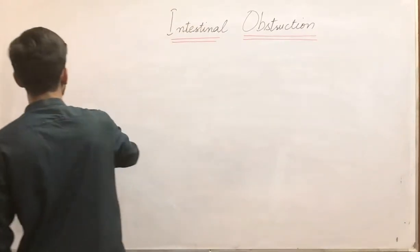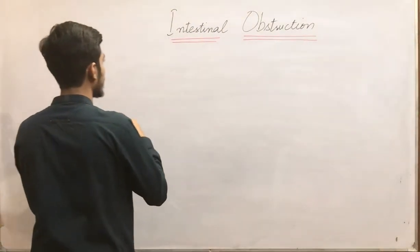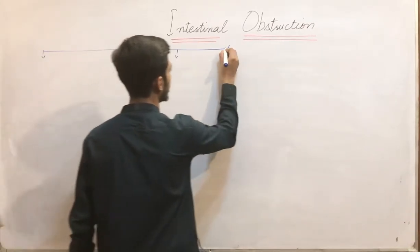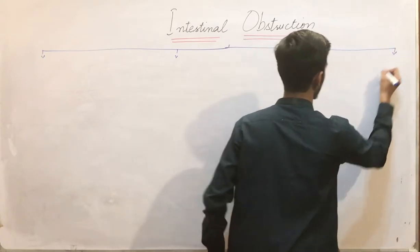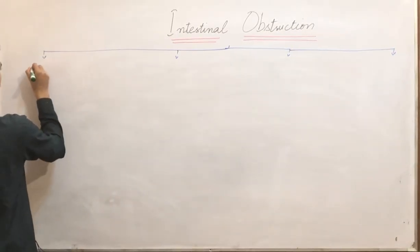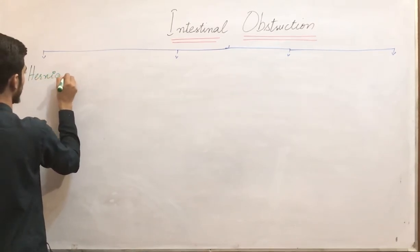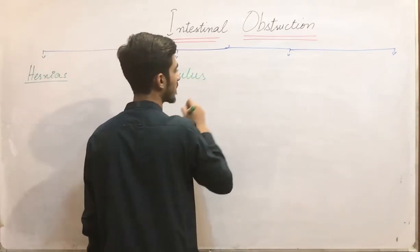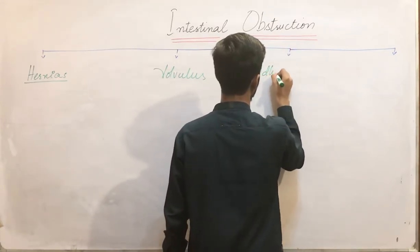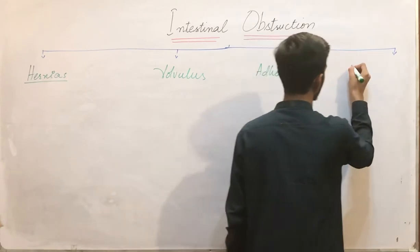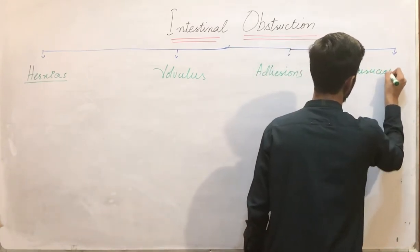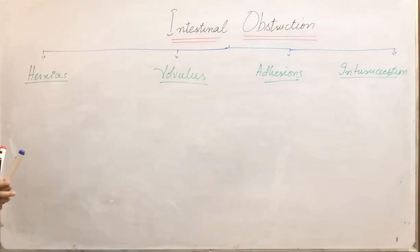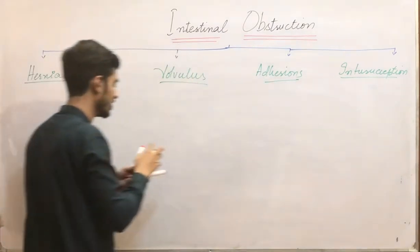There are four main causes of intestinal obstruction that we will discuss one by one. The first cause is hernia or hernias. The second is volvulus. The third cause is adhesions. And the last one is intussusception. Starting with hernias.